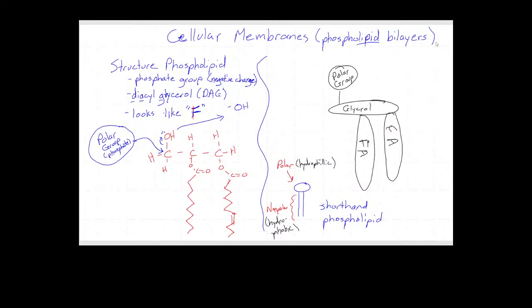Cellular membranes are made of phospholipid bilayers. 'Phospho' tells us we've got a phosphate group, which has a negative charge — so that's a charged molecule. They also have lipids, which are macromolecules that don't interact happily with water, so they group up and get away from water. They're made of bilayers, and we'll see from the structure why they form bilayers. The structure of a phospholipid includes a phosphate group with a negative charge, a diacylglycerol (DAG), with the glycerol being the backbone and the acyl chains being branches off the backbone.